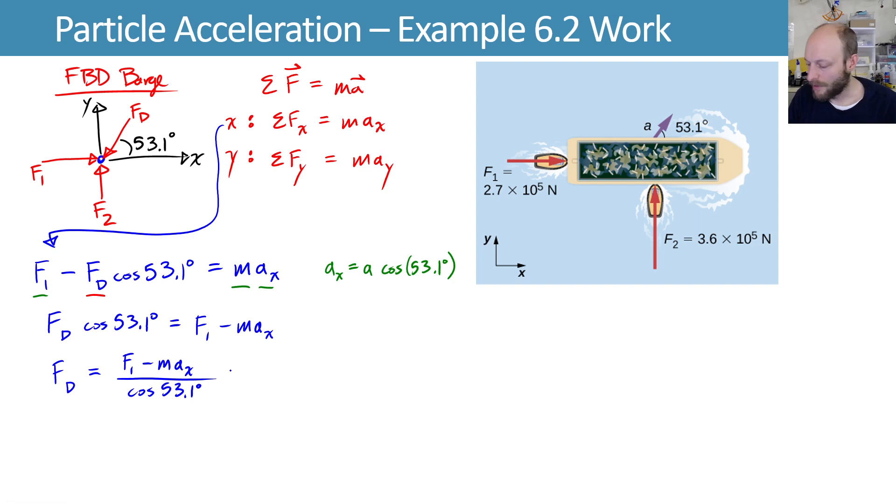We'll plug in the things we know. So this f1 is the 2.7 times 10 to the 5th newtons. Mass was whatever we said on the other slide. 5 times 10 to the 6th kilograms. And then times ax, which is a, it had a magnitude of 7.5 times 10 to the minus 2 meters per second squared times the cosine of 53.1 degrees. So that's all on the top.